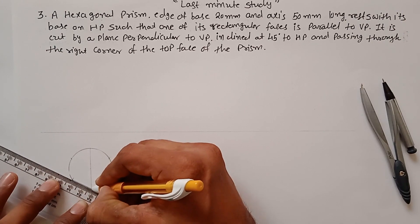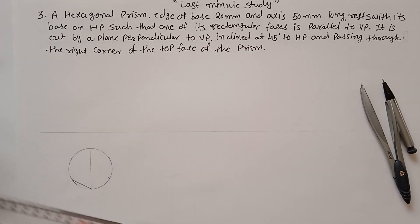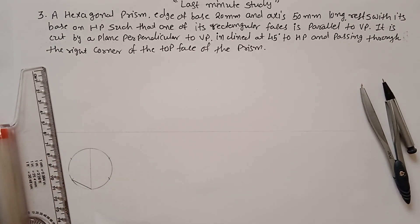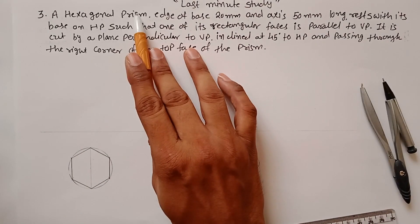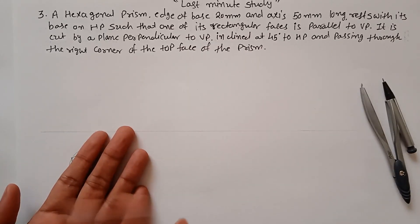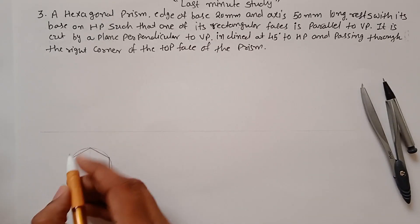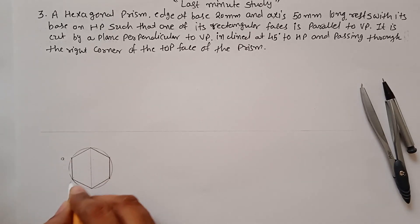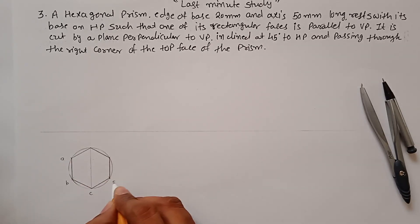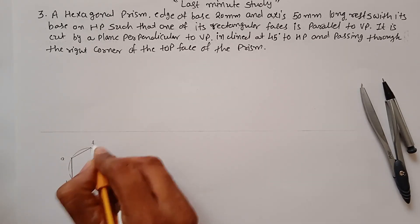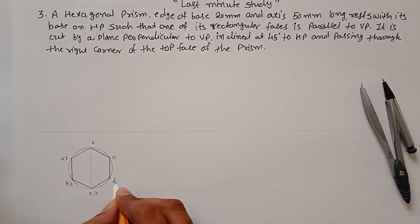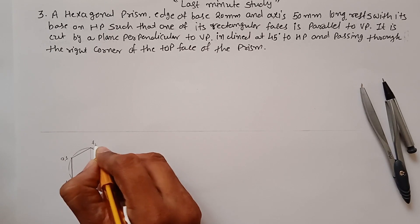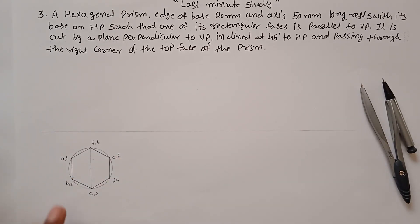Join each and every corner. Now give names to the points. Since this is a prism, you need two hexagons — one at the bottom and one at the top. The bottom hexagon points are labeled a, b, c, d, e, and f. The top hexagon points are labeled 1, 2, 3, 4, 5, and 6.